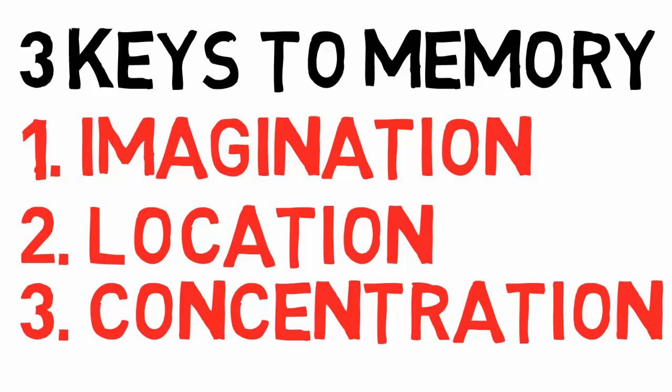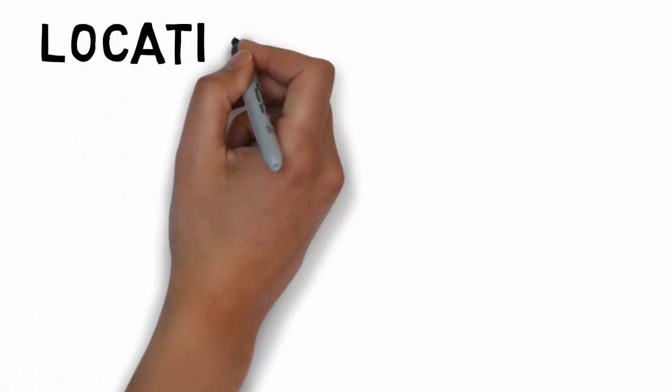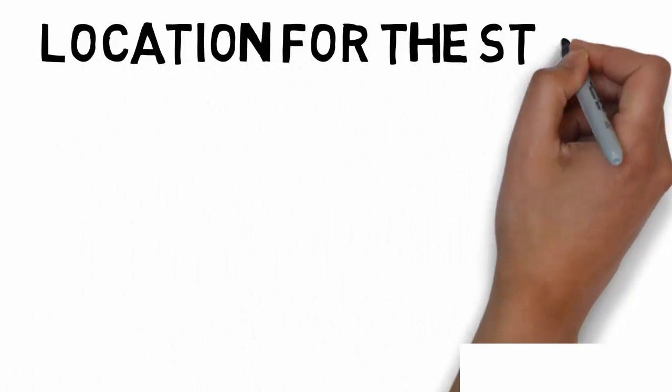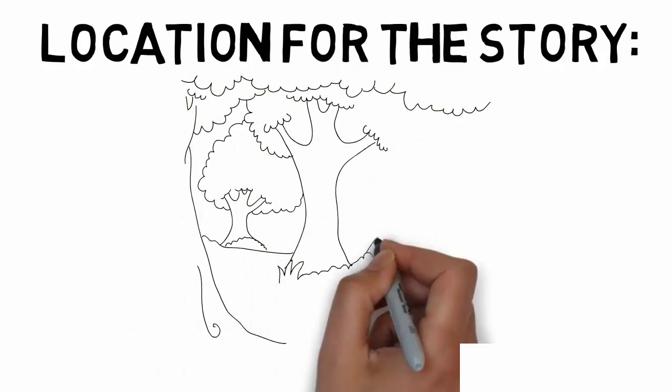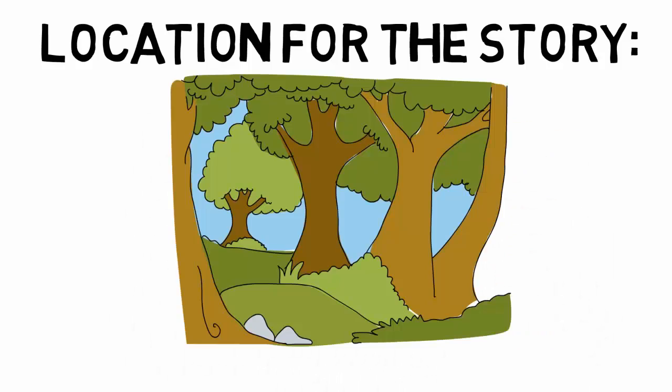And lastly, concentration — you really want to focus on the story that you're creating, really picturing it in your head, make it seem like it's really happening. Now for the location of the story we're going to be creating, you want the location to relate to the information. So since we're talking about the classification of life, a place that has a lot of life is a jungle or forest. So the location we're going to be using is a forest.